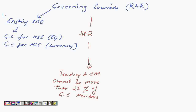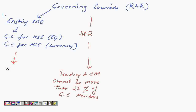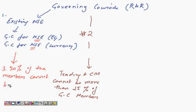Third, drawing further to this point: just in case for an existing exchange where the governing council has now been separated, it says that 50% of the members cannot be common. So in the case of NSE, if the currency governing council has been separated, less than 51% of the members have to be common — you can't have the same governing council for equity and currency.